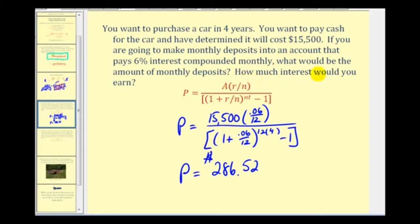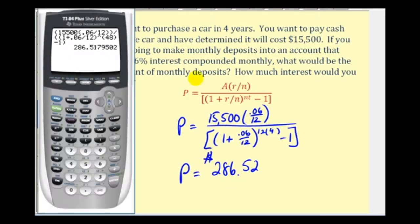The second part asks us how much interest would be earned over this four year period. We'll pay this amount 12 times a year for four years, so that value represents the amount paid into the account. To figure this out, we'll take the ending account balance of $15,500 and subtract the total deposits: $286.52 every month, times 12 months per year, times four years. So we would earn $1,747.04 in interest over this four year period.